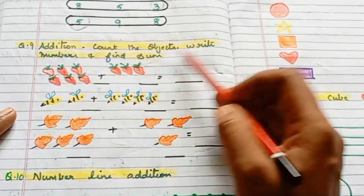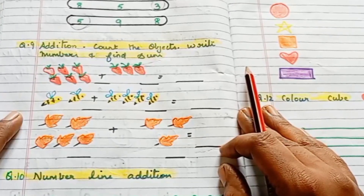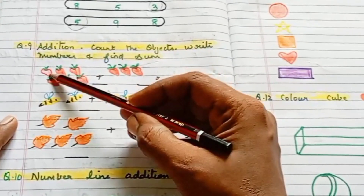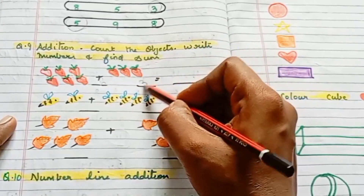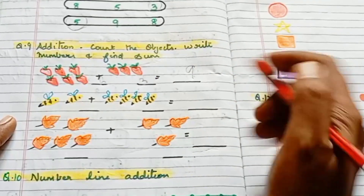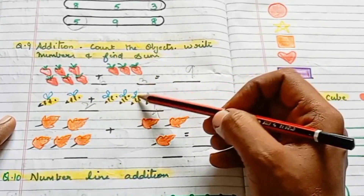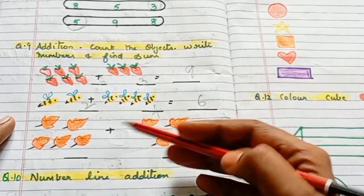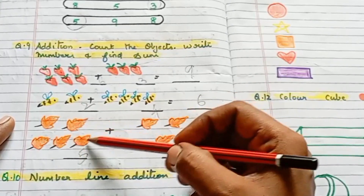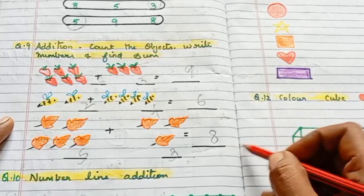Next question: Addition — count objects, write the number, and find the answer. First: strawberries 1, 2, 3, 4, 5, 6 — write 6, plus 3 — answer 9. Next: 2 plus 4 — 2, 3, 4, 5, 6 — answer is 6. Next: 5 leaves plus 3 leaves — 1, 2, 3, 4, 5, 6, 7, 8 — 5 plus 3 is 8.